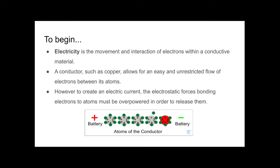However, to create an electric current, the electrostatic forces bonding electrons to atoms must be overpowered in order to release them. See here, below you can see the free movement of electrons between the atoms of a conductor.